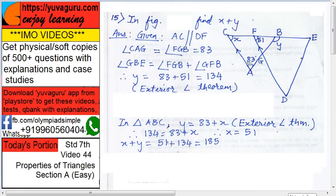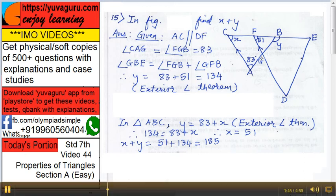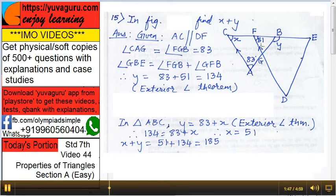Now we have to find x and y, and this is given as 51 degrees. AC is parallel to DF. That's given. Therefore, angle CAG equals angle FGB. These two angles are corresponding angles.